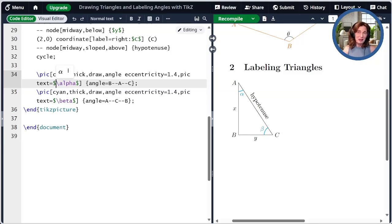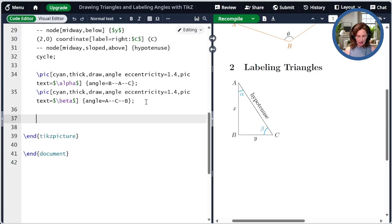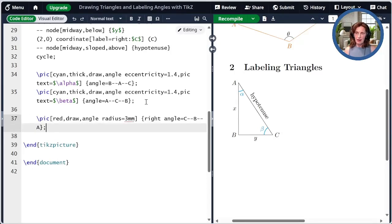There is a special pick for right angles that works the same as the angle pick except that it draws a little square. So this is really nifty. The angle at B is a right angle. So let's paste our right angle pick. So here the arguments are the same. We have angle radius at 3 mm. And rather than just angle, we're saying right angle. And the result over here is that we've drawn a little square. So now we have a fully labeled triangle.